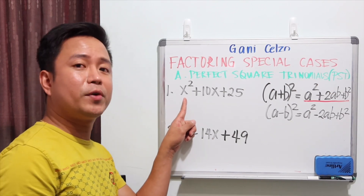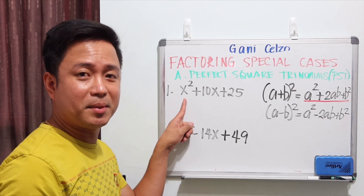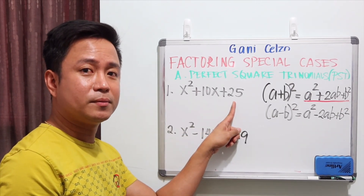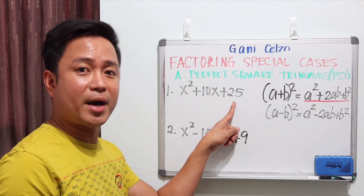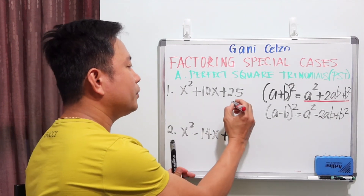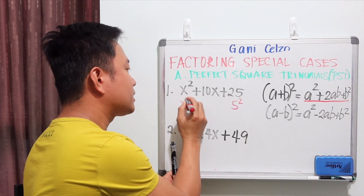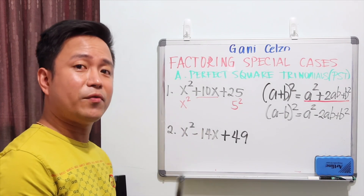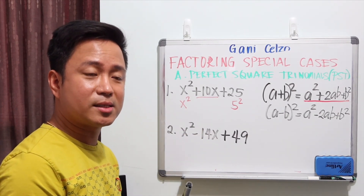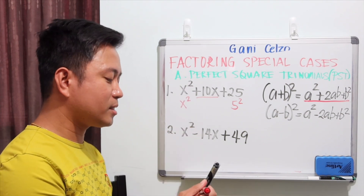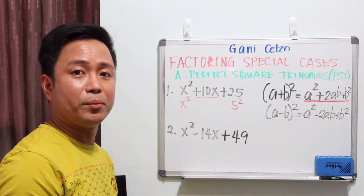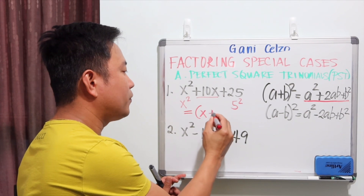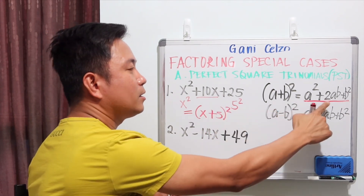For the first example, is the first term a perfect square? Yes it is, because x times x is x². Is 25 a perfect square? Yes it is, because 5 multiplied by 5 equals 25. If you multiply 5 by x and double it, are you getting the middle term? 5 times x is 5x, doubled is 10x. Therefore, x² + 10x + 25 is a PST, and we can factor it as (x + 5)².